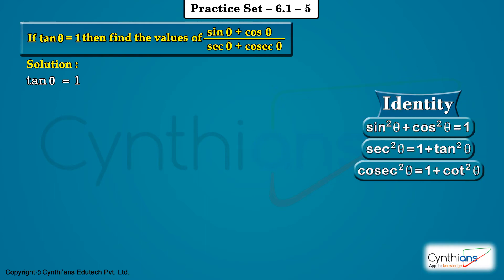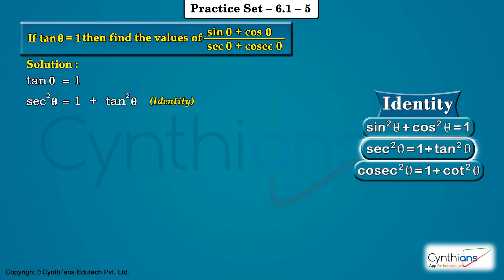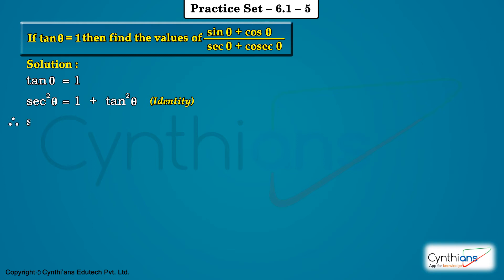We have the identity: sec square theta is equal to 1 plus tan square theta. Therefore, sec square theta is equal to 1 plus 1 squared, which is 1 plus 1. What is 1 plus 1? That is 2. Therefore sec square theta is equal to 2.